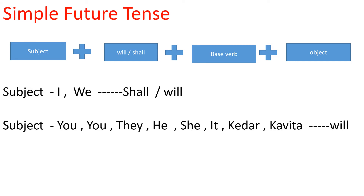We have to learn that when the subject is I and we, we have to use shall or will. In modern English, will is also used. When the subjects are you, they, he, she, or names like Kedar and Kavita, we have to use will.